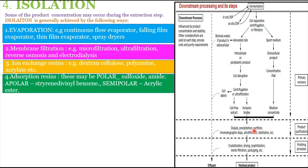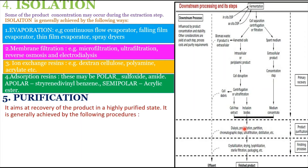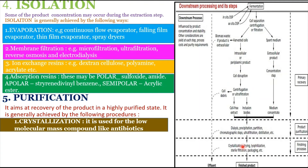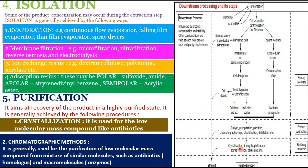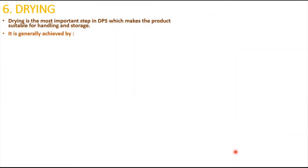The fifth step is purification, where the product is brought to a highly purified state. This is achieved by crystallization, which is used for low molecular mass compounds like antibiotics. Chromatographic methods are also widely used, including ion exchange chromatography, partition chromatography, affinity chromatography, and adsorption chromatography — mainly to purify low molecular mass compounds such as antibiotics and macromolecules like enzymes.